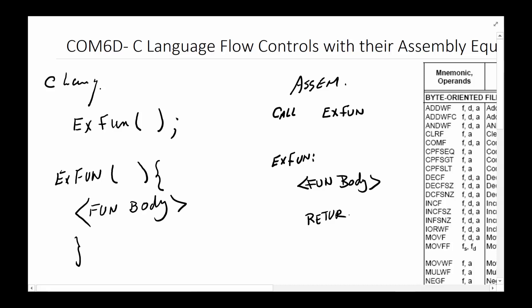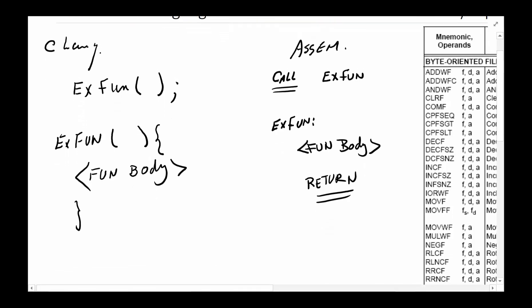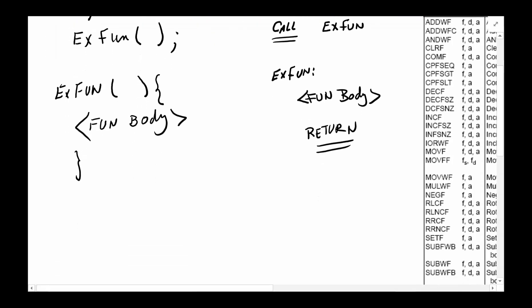What the call does is jump to that function and push onto the stack where it should come back, and when it hits a 'return' it returns back. There are some variations — relative return, relative calls, and a few others — but that's the main one that deals with function calls and function returns.